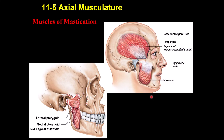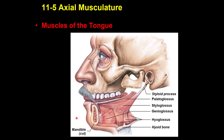The muscles of mastication include three that close the jaw: temporalis, masseter, and medial pterygoid. The lateral pterygoid opens the jaw. The lateral and medial pterygoids together also move the jaw side to side.